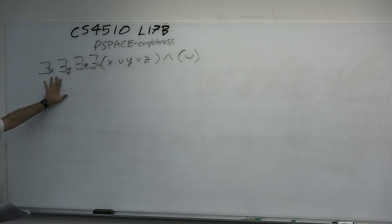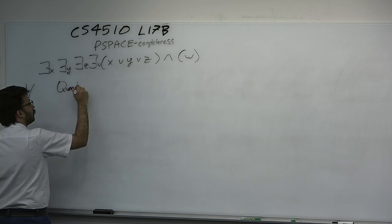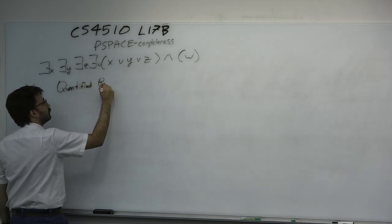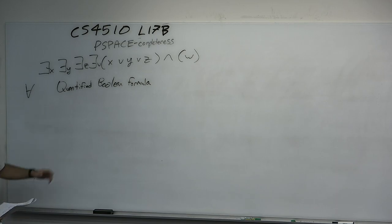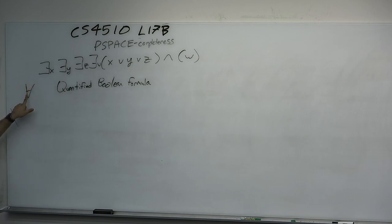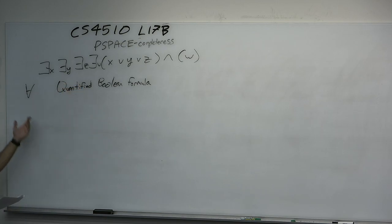What happens if we replace these existential quantifiers with other quantifiers — specifically the universal quantifier? What if we arbitrarily replace some existential quantifiers with universal ones? We get a generalized problem called a quantified Boolean formula. If you have a statement like a SAT formula, except you can have universal quantification instead of only existential quantification, then you have what's called a quantified Boolean formula. Every SAT formula is a special case with only existential quantification.